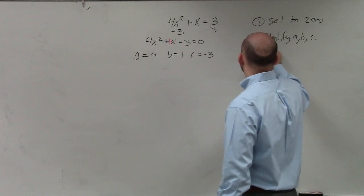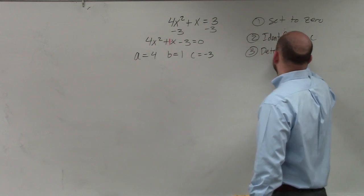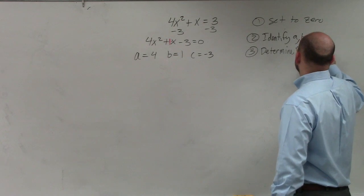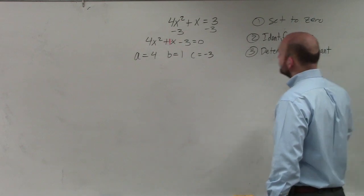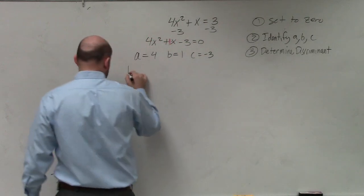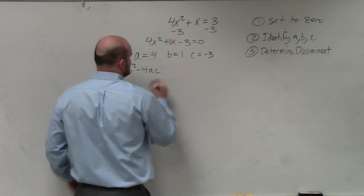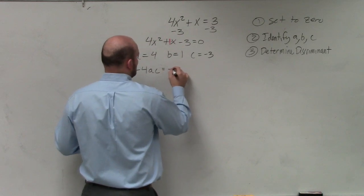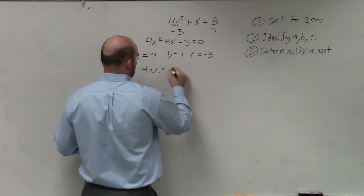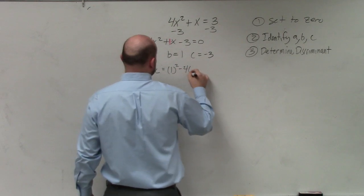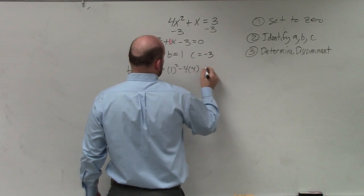Step number three, determine discriminant. So you guys remember the discriminant. That's just b squared minus 4 times a times c. So in this case, that's going to be 1 squared minus 4 times a times c.